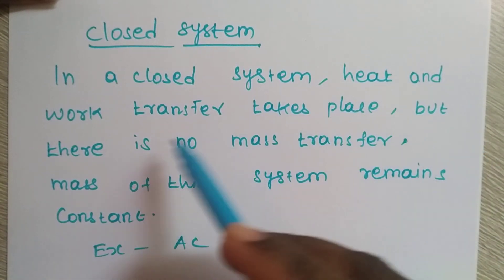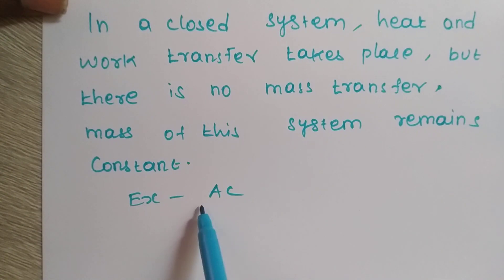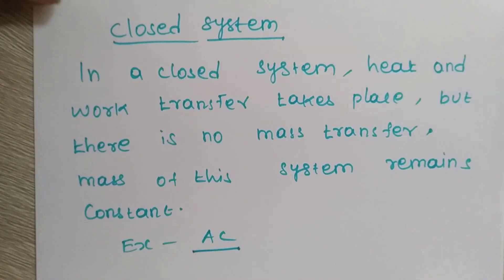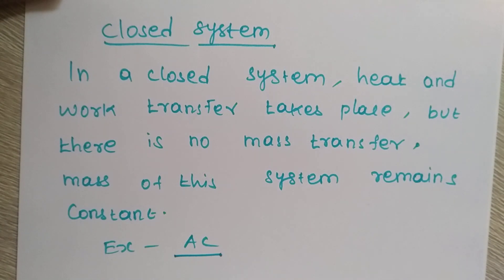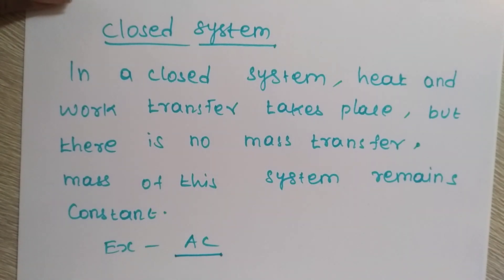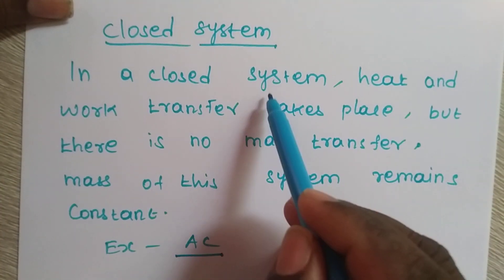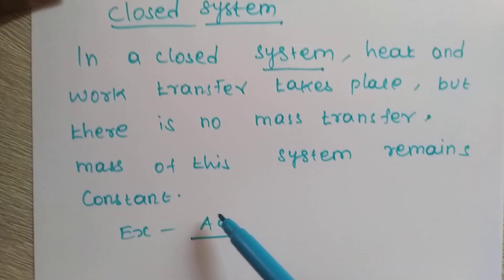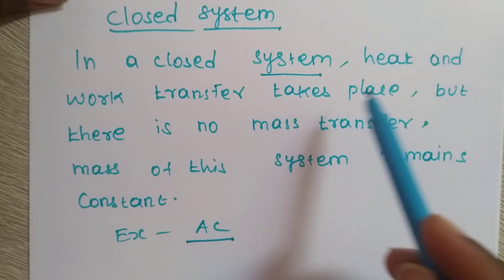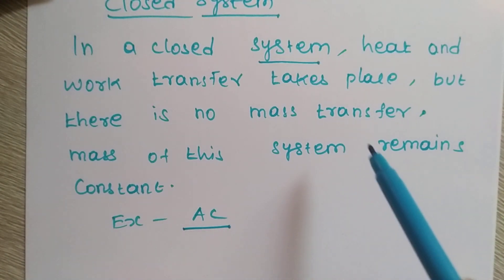In a closed system, there is heat transfer, work transfer, but no mass transfer. For example, an AC is a closed system. In any thermodynamics process — water, gas, petrol, diesel — each can be a system. In the AC, the refrigerant gas follows a closed path with heat transfer and work transfer.